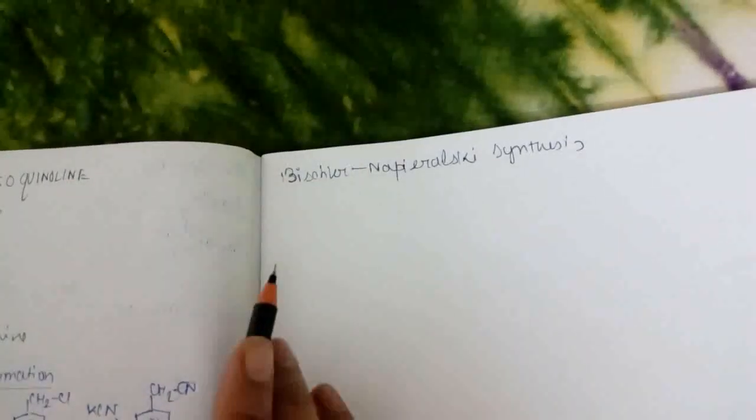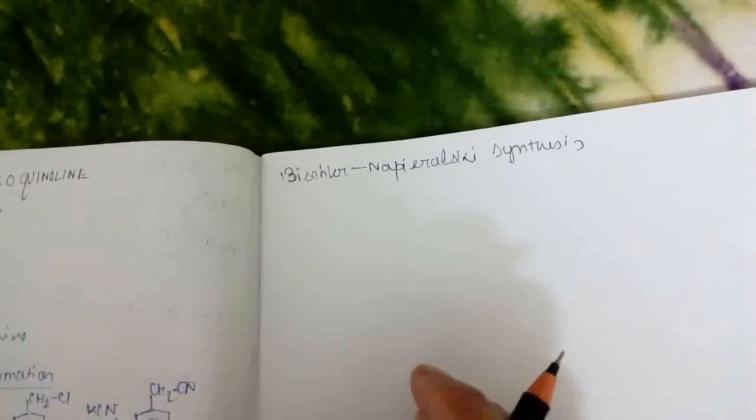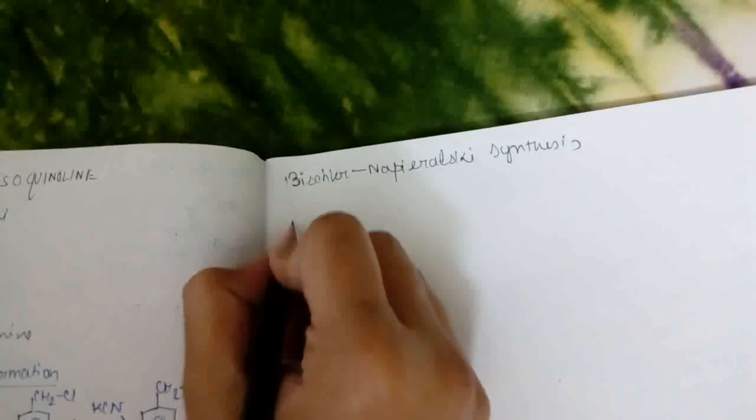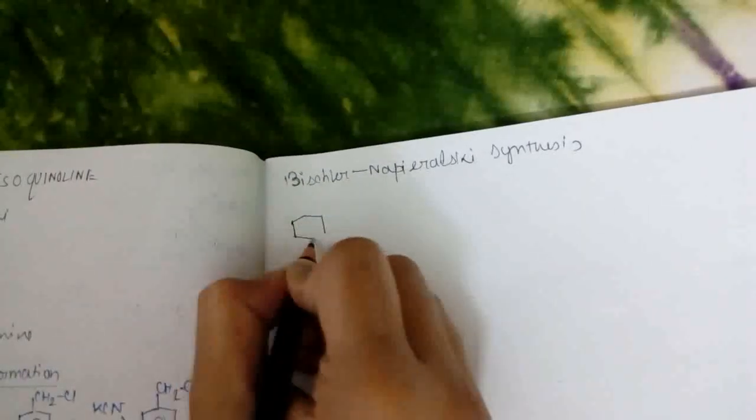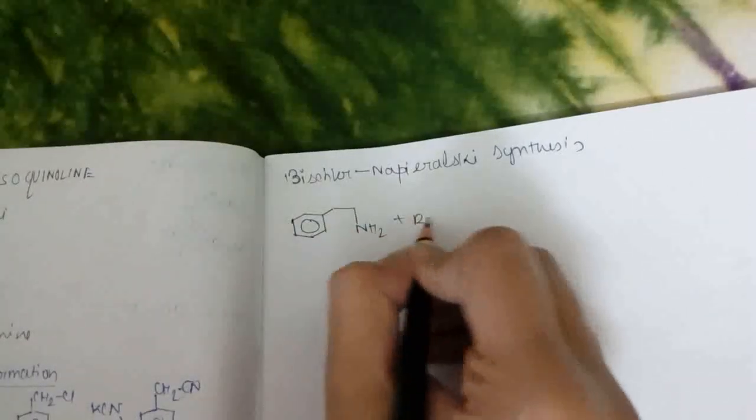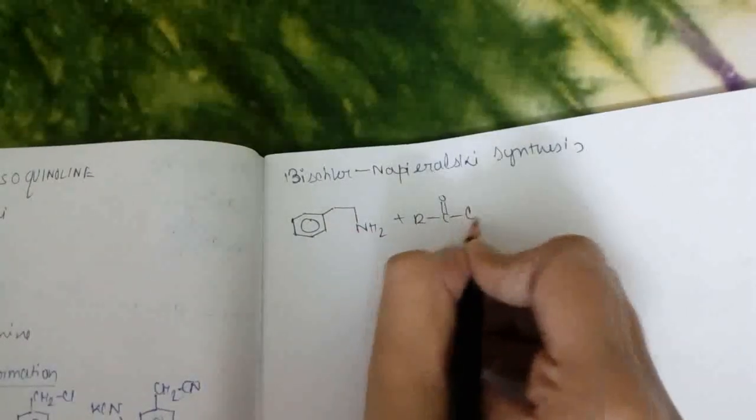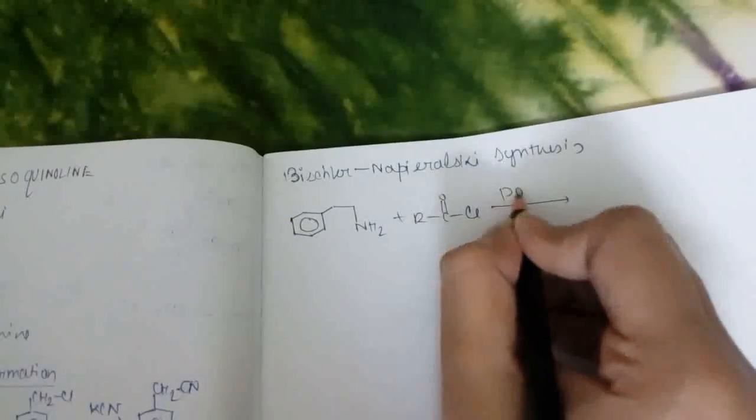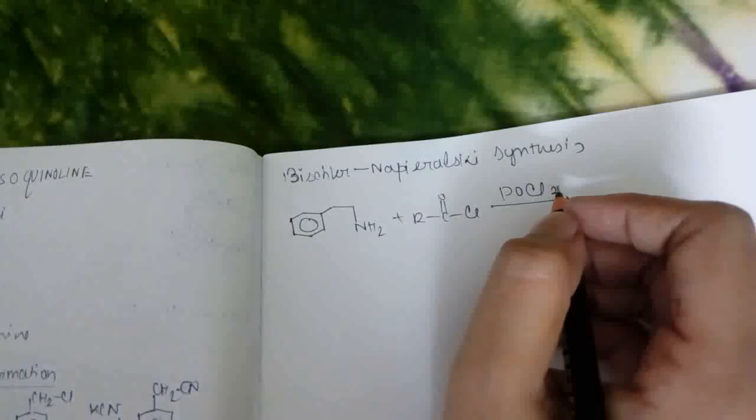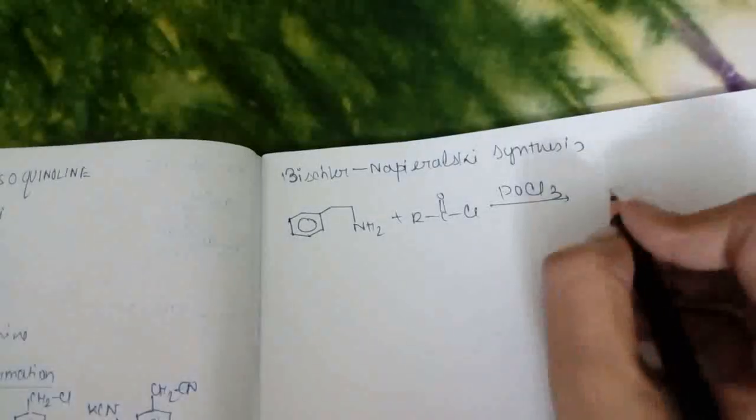Now Method 1: Bichler-Napiereski synthesis of isoquinoline preparation. Beta phenyl ethylamine reacts with acid chloride RCOCl in presence of POCl3, then 3,4-dihydro isoquinoline is formed.